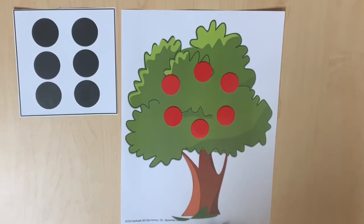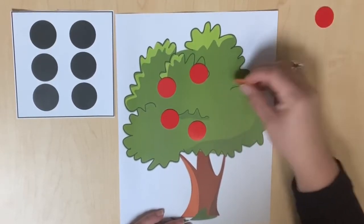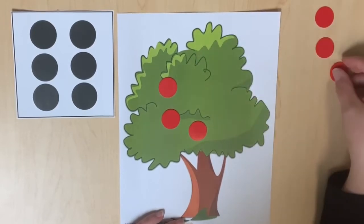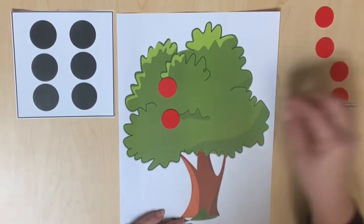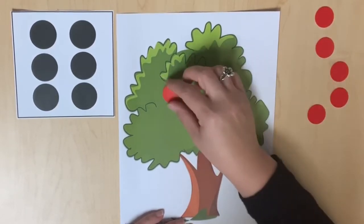Finally, remove each counter and practice counting backward: 6, 5, 4, 3, 2, 1, 0.